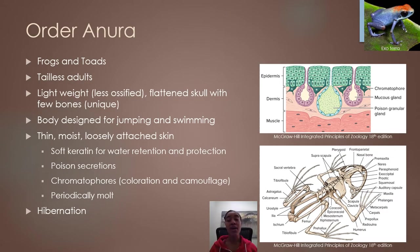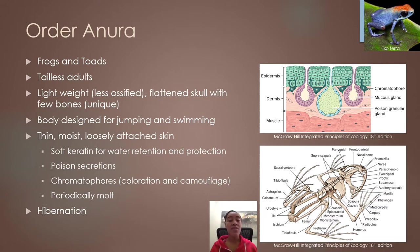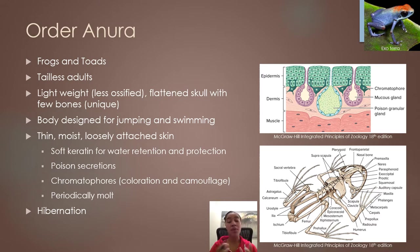Frogs and toads belong to order Anura — these are the amphibians that lack a tail in their adult form, which is where their name comes from. Anurans have a very unique skeletal structure. Their skull is very lightweight because it has less ossification than any other vertebrates on earth, with a flattened profile and fewer bones than the average vertebrate skull. They also have a shortened body that focuses most of the power into their hind limbs, with musculature and skeletal structure designed for very powerful hind limbs for jumping and swimming. They have very few vertebrae, and their coccyx has been extended into a long structure called the urostyle.